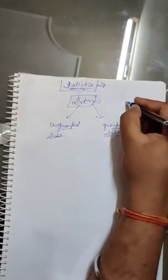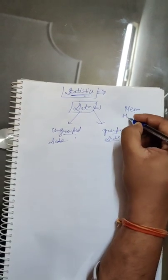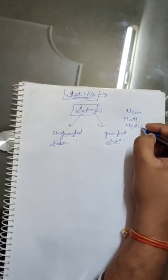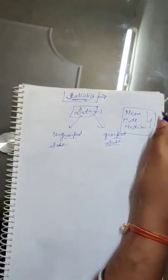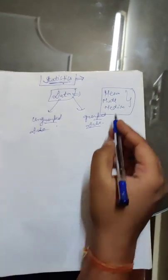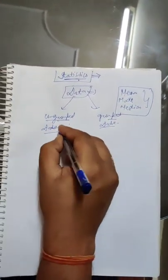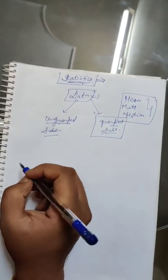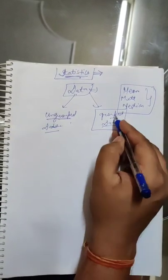The three main terms are mean, mode and median in class 10th. In the earlier classes we have studied how to find mean, mode and median of ungrouped data. In the 10th standard we will discuss how to find the mean, mode and median of grouped data.